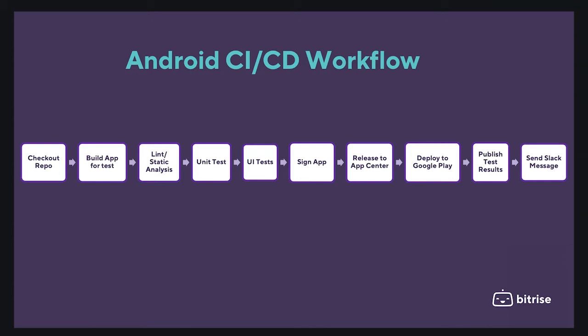Let's assume that we design this workflow for our Android app to implement the CI/CD pipeline, including: check out the code repository, build the app for test, run lint or static analysis checks, run unit tests, then run UI tests — this part is the CI, or continuous integration. Then, if everything is green and passing, we can continue to sign the application, release to beta testing, and deploy it to the app store.